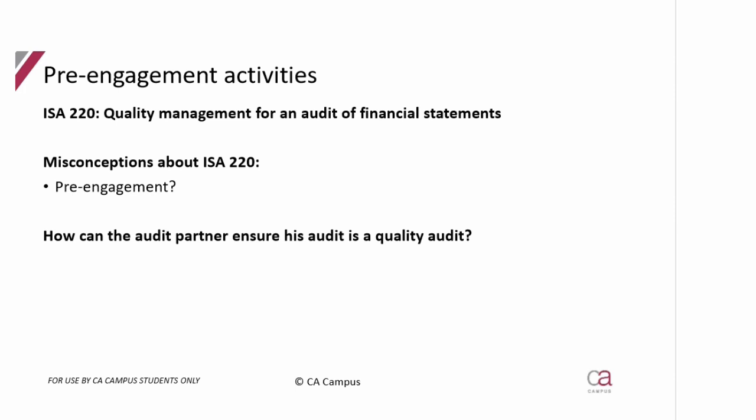A misconception about ISA 220 is that everybody thinks it is purely a pre-engagement standard. Just like ISQM1, there is only one paragraph dealing with pre-engagement — the acceptance and continuance paragraph. The rest deals with how the entire audit should be managed to ensure quality. But when doing pre-engagement, you do need to come to this standard because there is an entire paragraph that addresses it.